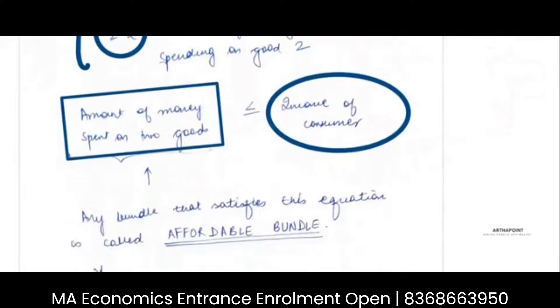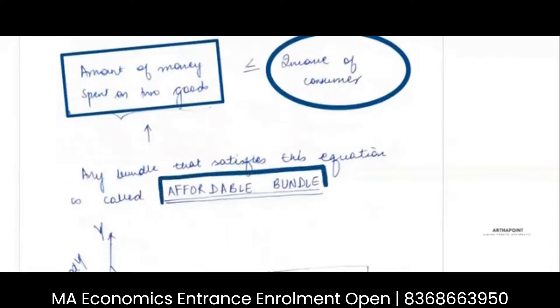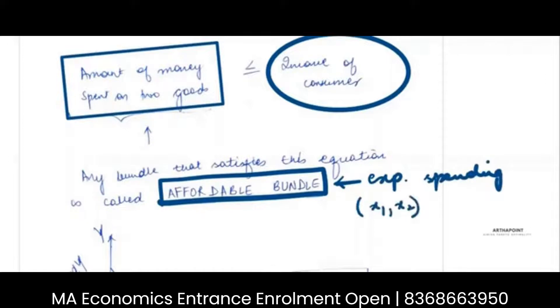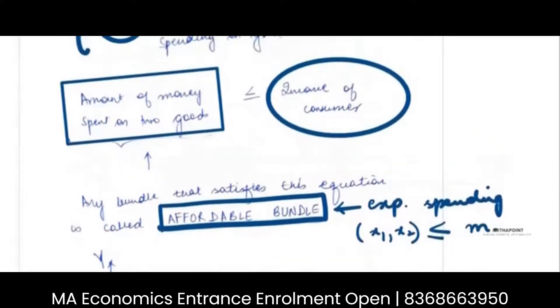Any bundle that satisfies this equation is known as an affordable bundle. A bundle is called an affordable bundle if the expenditure you spend on that bundle is either less than or equal to the income of the consumer. If either condition is satisfied, it is called an affordable bundle. Let's do a few questions to see if you understand the concept.